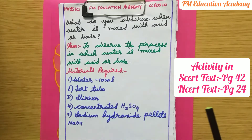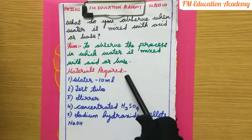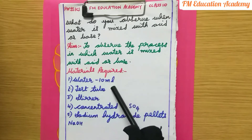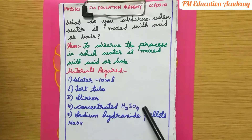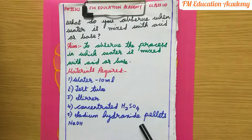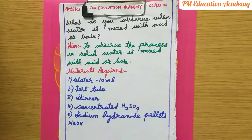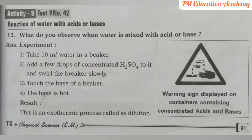The materials required for this activity are: water, a 10 ml test tube, a stirrer for mixing, concentrated sulfuric acid (H₂SO₄), and sodium hydroxide pellets (NaOH). The sodium hydroxide available in solid form is called sodium hydroxide pellets.